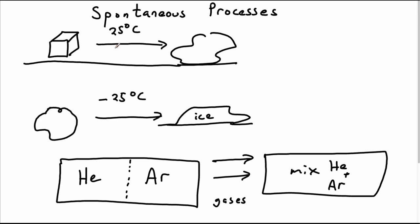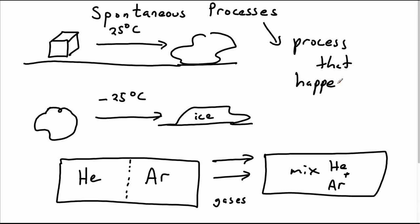The same thing applies to ice: if we saw ice forming at a high temperature like 25 degrees C, that would be odd — we wouldn't expect to see that. So for all of these examples, the arrow of time points to the right, and so spontaneous is to the right. A spontaneous process is simply a process that happens by itself; it doesn't need any kind of outside intervention to make it happen. It just happens.